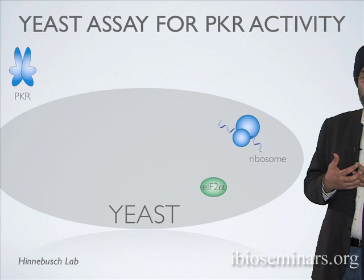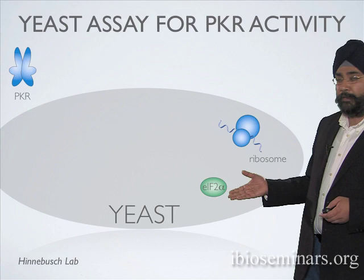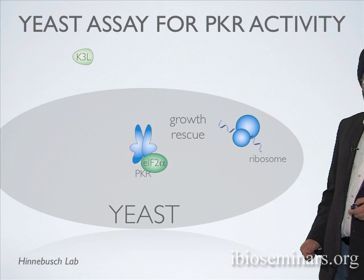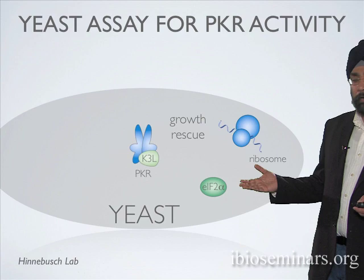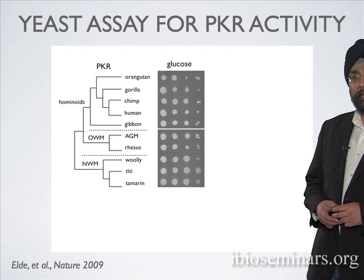We wanted a system to simply assay the effects of mutations and evolutionary adaptations, and we took advantage of an assay developed by Tom Dever and Alan Hinnebusch, who recognized that EIF2-alpha is so slow to evolve that if you put human PKR in yeast, it will actually bind and phosphorylate yeast EIF2-alpha to cause a growth arrest. If we now also introduce K3L, it gives us a readout of whether K3L is able to defeat PKR based on whether it can rescue the growth inhibition.